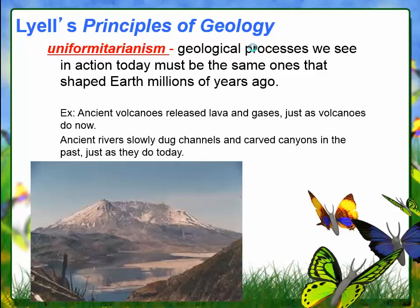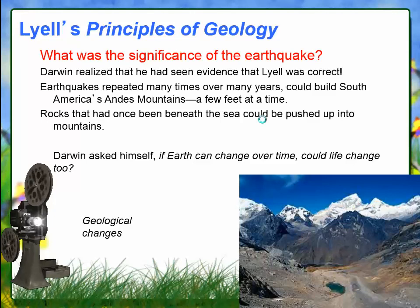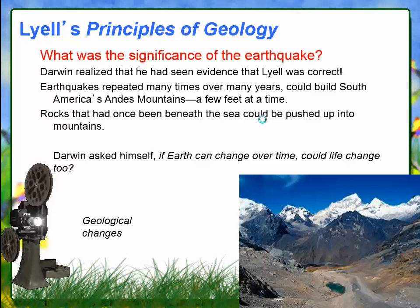Lyell is known for uniformitarianism — the idea that the processes we see today have to be the same ones that shaped the Earth millions of years ago. For example, volcanoes release lava and gases, and rivers dig channels and carve canyons, just as they do today. Darwin found shells on mountains, which could only be there if those mountains had once been under the sea and earthquakes had pushed the land up. He also found coral reefs at great depth — since coral needs to be close to the light near the surface, this meant the land must have shifted downward.